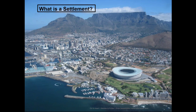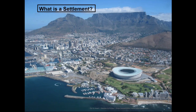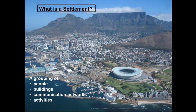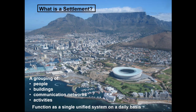I want you to write down quickly from what I've explained what makes a settlement. So when we look at the answer: we have got people, we have got buildings, we have got a communication network, we have got activities, and at the end of the day, we all work together as a unit.